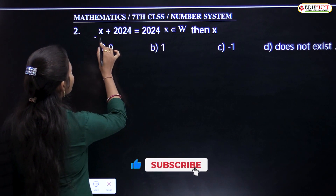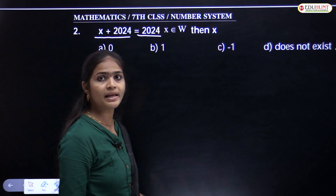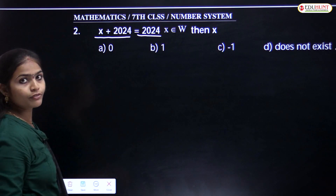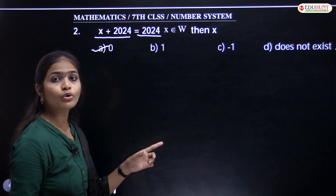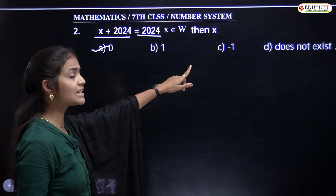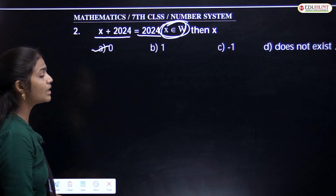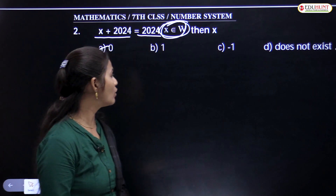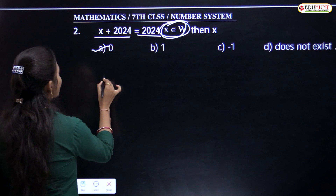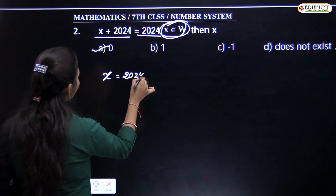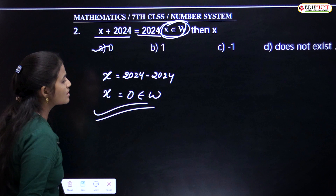Next: x plus 2024 equals 2024. This is the same problem as the previous one. If you add something to 2024 and the result is again 2024, which number do you have to add? Simply, that is 0. But here you have to check the condition — x belongs to whole numbers. Is 0 a whole number? Yes, 0 is a whole number. So x equals 2024 minus 2024, which gives x equals 0 belonging to whole numbers. This is the correct option.